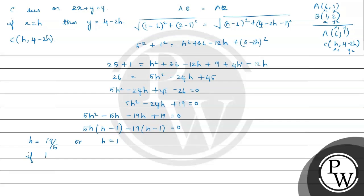If h = 1, then the coordinate of C would be (1, 2), which equals the coordinate of B — that is not possible. So h = 1 is rejected, and we take h = 19/5.